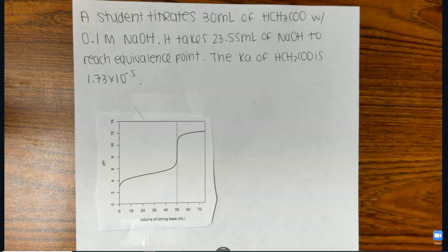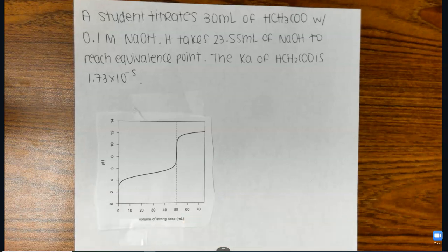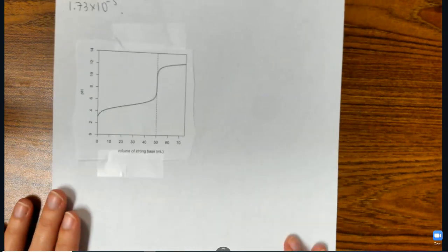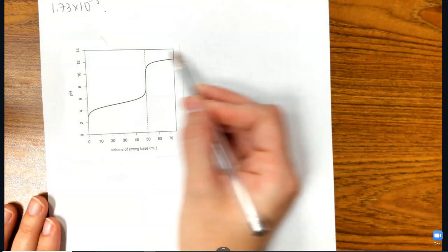So when you have this type of titration, this is what the curve looks like. Now this curve does not match this problem, but let's just look at this curve. A few things, I know it's a weak acid-strong base titration because of the shape of this curve.